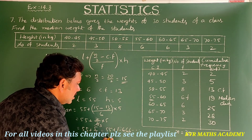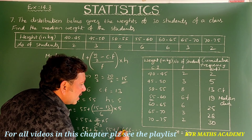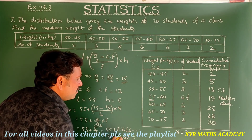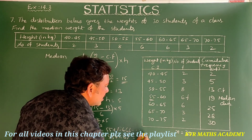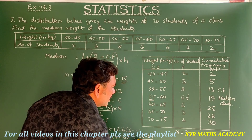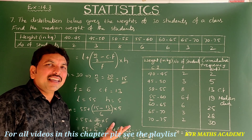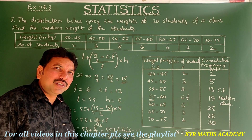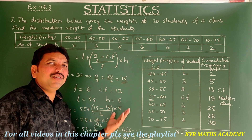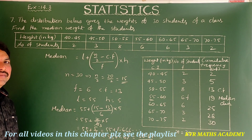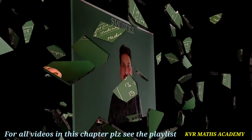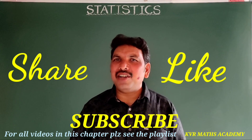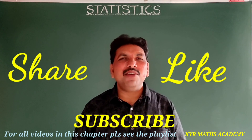So the median weight is approximately 55 + 1.67 = 56.67 kg. This is the median weight of the given students. If you like this video, please like and share. Don't forget to subscribe. Thank you very much.